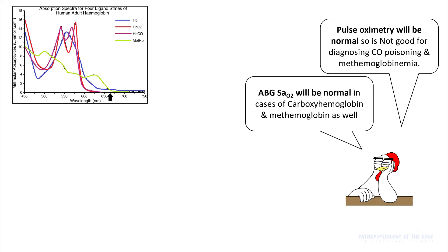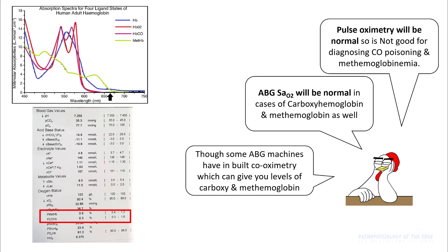Pulse oximetry is not good for figuring out carbon monoxide poisoning, and similarly, ABG SaO2 will also be very poor in identifying this problem. To figure these out, the ABG machine does something extra called co-oximetry, which uses four wavelengths and should provide this number in your oxygen status. You can look at your FMETHB and FCOHB levels to figure out if you have carboxyhemoglobin or methemoglobinemia.